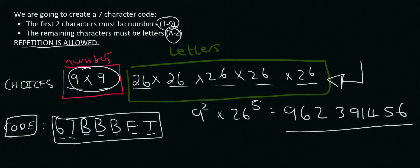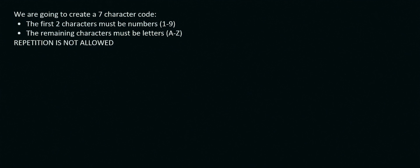So remember in our very first lesson in this chapter where we had someone going out for dinner and we came up with all the possibilities ourselves. We had stuff like BYO and things like that. Well if you had to try this one manually you would have to do this 962 million times 391,456. That would probably take you a couple of months.